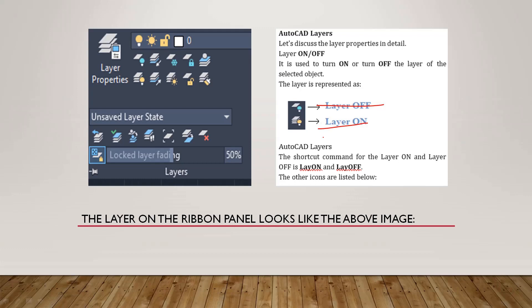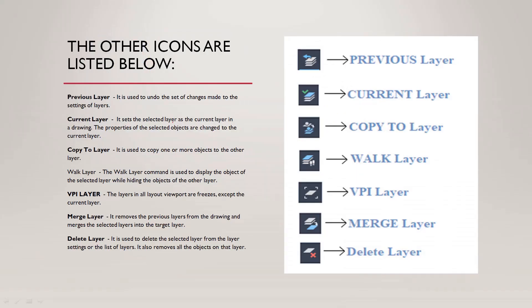Using layer icons, you can turn layers on or off. In the previous layer option, you can select the current layer and copy it to a work layer. In copy-to-layer, you can copy an object to another layer. In the walk layer option, you can display an object to a selected layer. The VPI layer allows you to freeze the viewport. The merge layer option lets you merge a target layer into a previous layer. The delete layer option allows you to delete entire layers from the list.